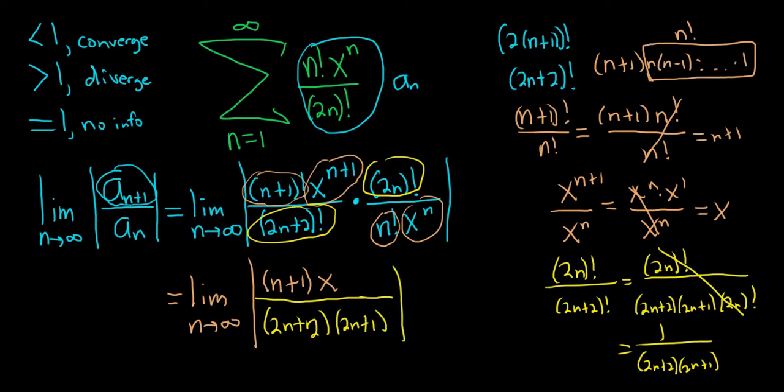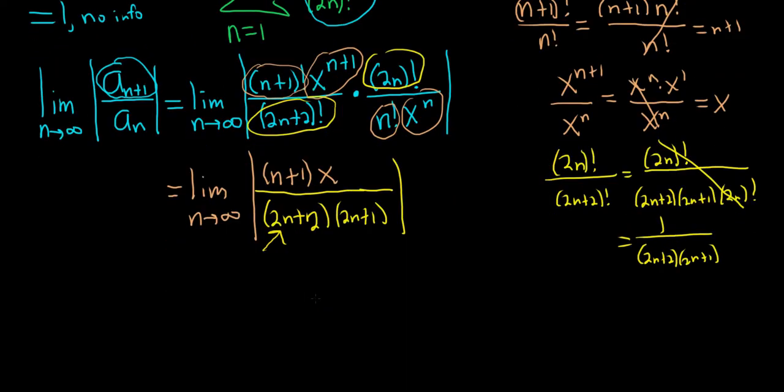At this point, we can factor out a 2 from the bottom. So this is (n+1) times x over 2(n+1)(2n+1). The (n+1) cancels.